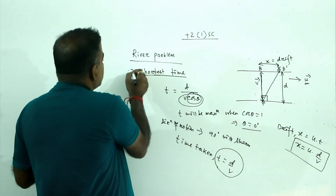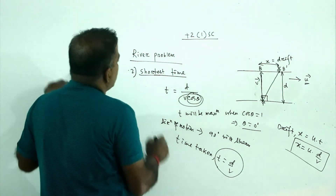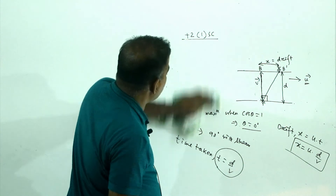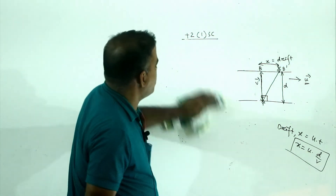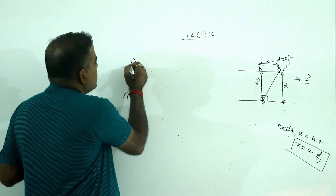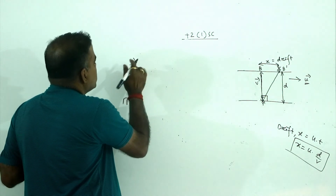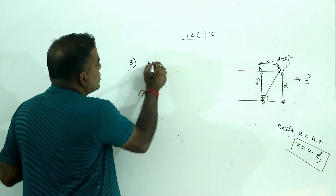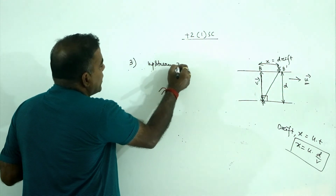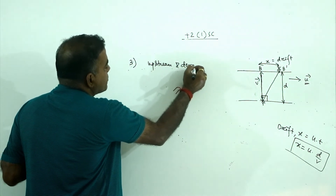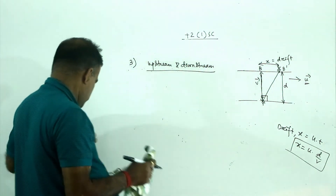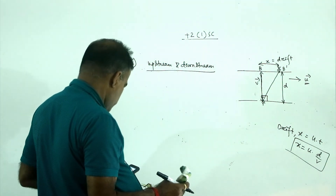That is how drift is calculated. Third case: the river problem involving upstream and downstream motion.